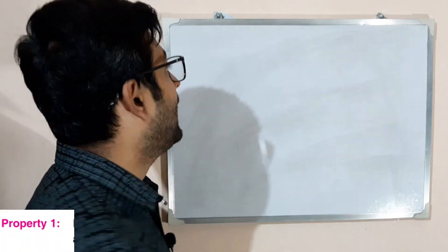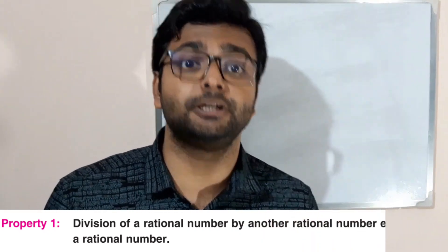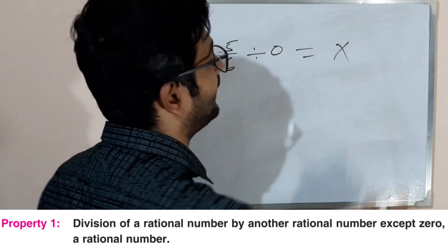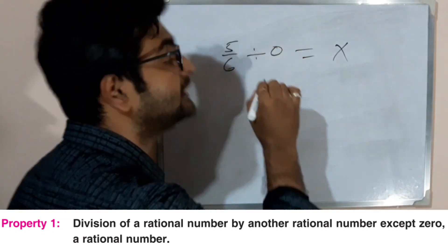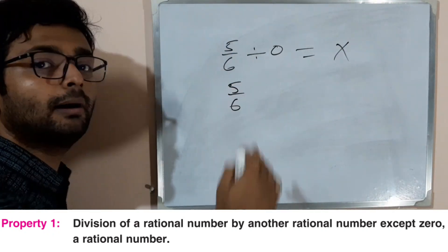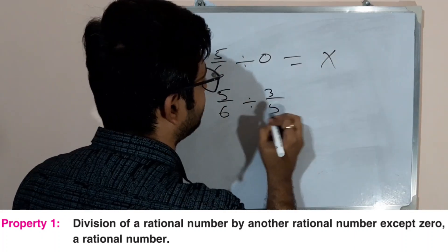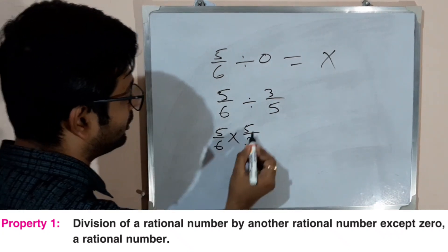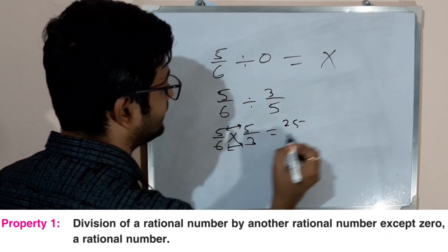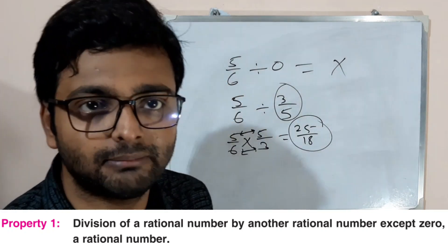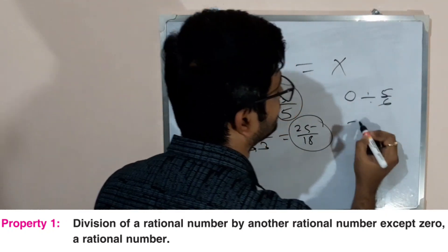The next property: division of a rational number by another rational number (except 0) gives another rational number. For example, 5 by 6 — if you divide it by 0, it is undefined. But 5 by 6 divided by another rational number, say multiplied after taking reciprocal, gives 25 by 18, which is another rational number.